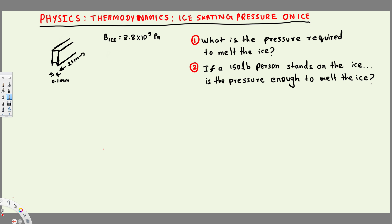The question is asking: what is the pressure required to melt ice? We have an ice cube with a 25 centimeter length and 0.1 millimeter width. They have given the bulk modulus of ice as 8.8 times 10 to the power of 9 Pascal. Let's see how we can find the pressure required to melt ice.